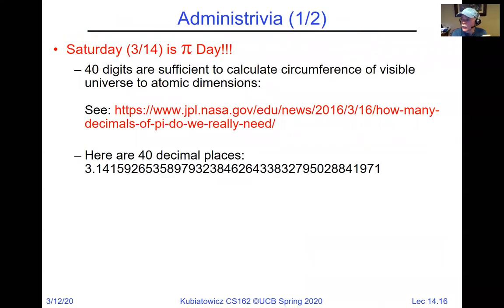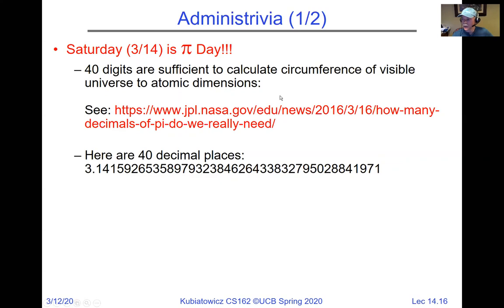Administrative note: Saturday is Pi Day — March 14th. Forty digits of Pi are sufficient to calculate the circumference of the visible universe down to atomic dimensions. The best formula for Pi is Ramanujan's incredible summation series for 1/Pi. Last year on Pi Day, Google employee Emma Haruka Iwao calculated Pi to 31,415,926,535,897 digits, setting a new world record.